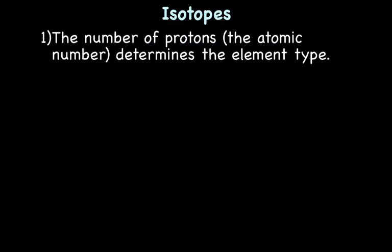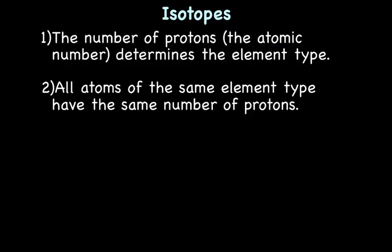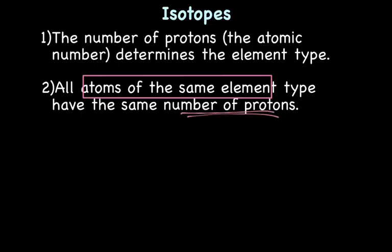It's the number of protons — the atomic number — that determines the type of element. For example, if we find an atom with one proton, we know it's hydrogen. An atom with 11 protons is sodium, because every sodium atom ever has 11 protons. If a sodium atom had 10 protons, it wouldn't be sodium — it would be neon. All atoms of the same element always have the same number of protons, because it's the number of protons that defines the type of element.